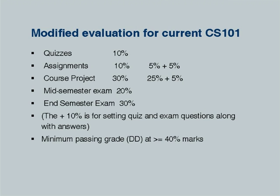I have modified the evaluation of the current CS101. The assignments which were 10 marks — these are lab assignments — we have announced that after the last lab assignment there will be no separate lab assignment; students can use labs for practice and project work. So I am reducing 5% marks from conventional assignment. The course project, which was 30%, will be reduced to 25%, and 5 marks set aside for something else.